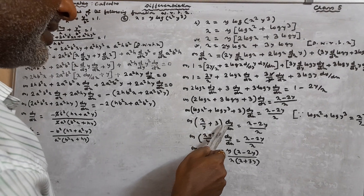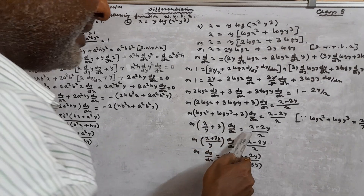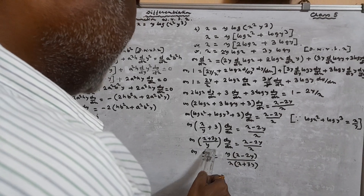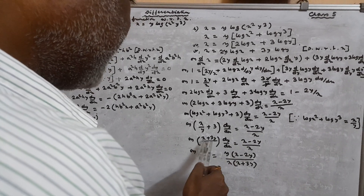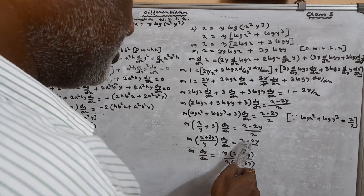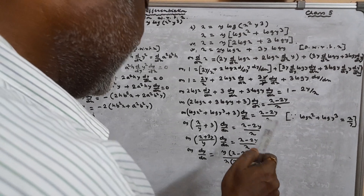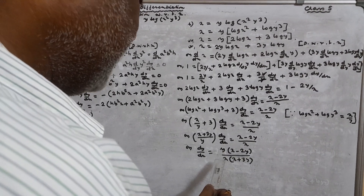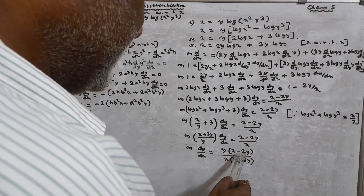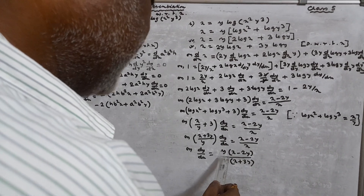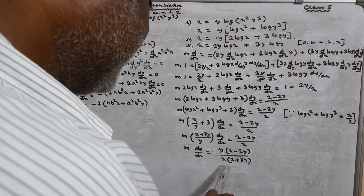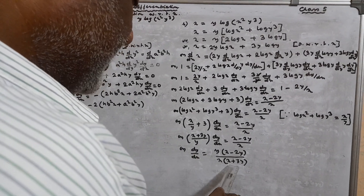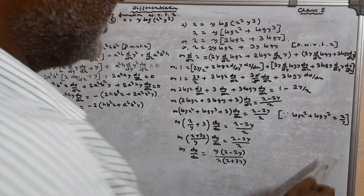Substituting: dY/dX · (X/Y + 3) = (X − 2Y)/X. Taking LCM Y on the left: (X + 3Y)/Y · dY/dX = (X − 2Y)/X. Therefore dY/dX = Y(X − 2Y) / [X(X + 3Y)]. That is the final answer.